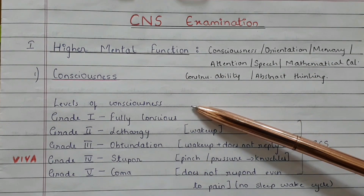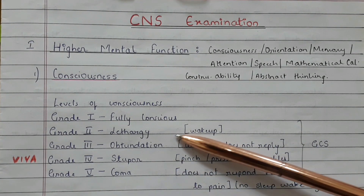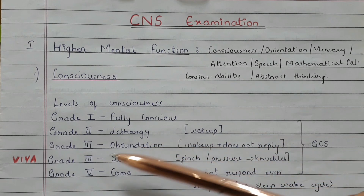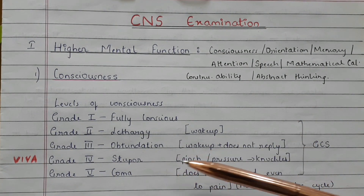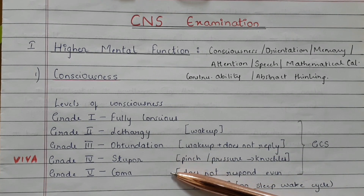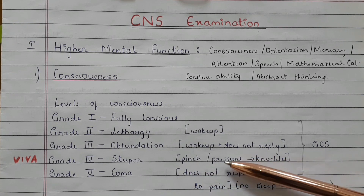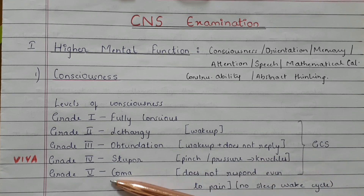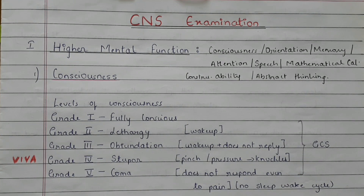The first one is consciousness. Levels of consciousness: Grade 1 is fully conscious. Grade 2 is lethargy, wherein you need to wake up the patient. Grade 3 is obtundation, wherein even after waking up the patient does not reply. Grade 4 is stupor, wherein you have to apply a slight amount of pressure by using your knuckles or pinch the patient. Grade 5 is comatose, wherein the patient does not respond even to a painful stimulus.